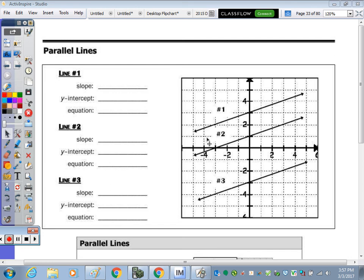Okay, in today's notes we're going to cover parallel lines. Given lines 1, 2, and 3 graphed to the right, we need to take a look at the slope, intercept, and write the equation for each.